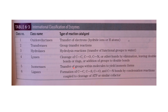Isomerases maintain the same chemical structure, but there are transfers of groups within the molecule to yield isomeric forms. And finally, ligases form carbon-carbon, carbon-sulfide, carbon-oxygen, and carbon-nitrogen bonds by condensation reactions coupled to cleavage of ATP or a similar cofactor to drive the reaction.